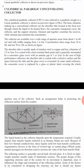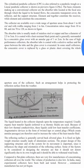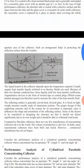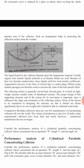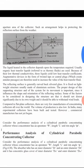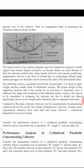For very small collectors, the concentric cover is replaced by a glass or plastic sheet covering the whole aperture area. The liquid heated in the collector depends upon the temperature required. Usually water or any organic heat transfer fluid - normally a thermic fluid - can also be useful.